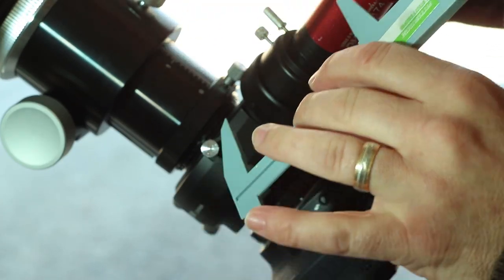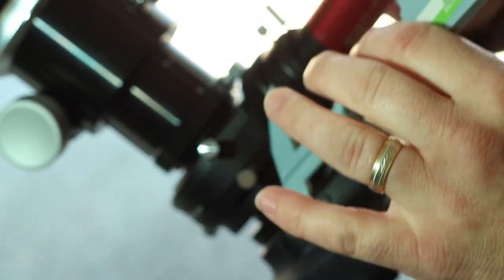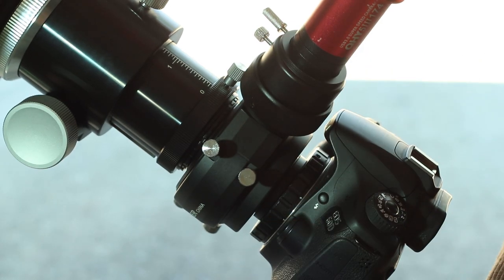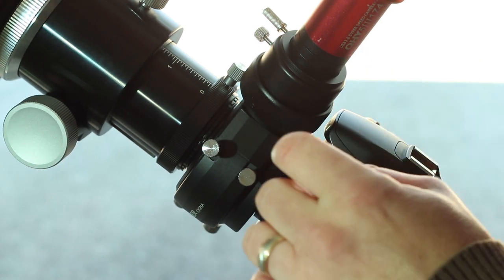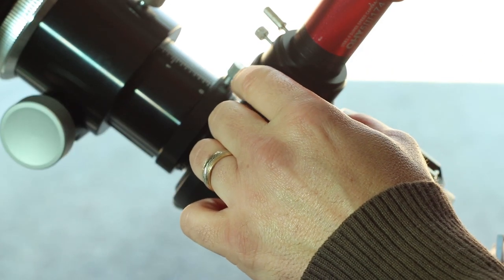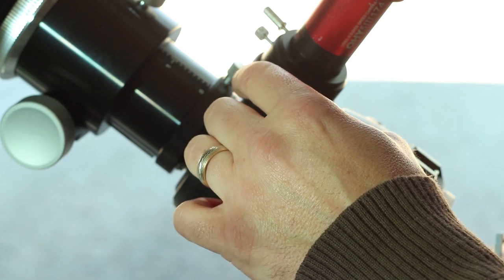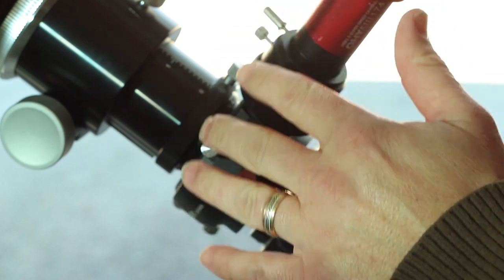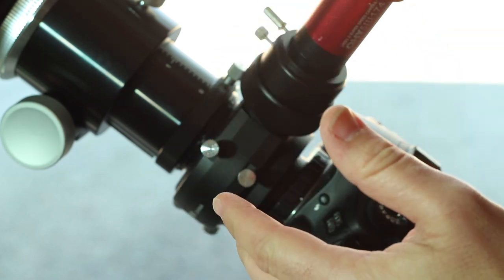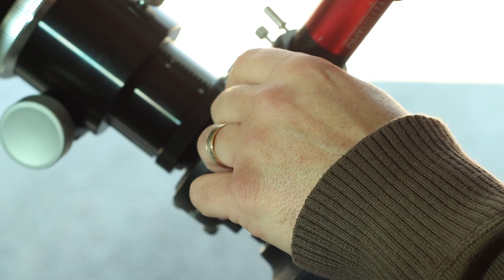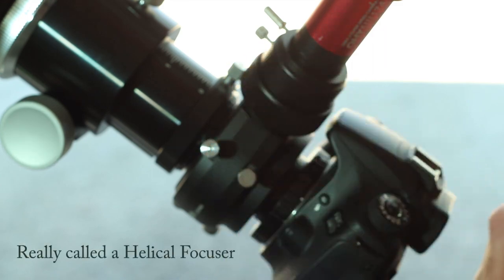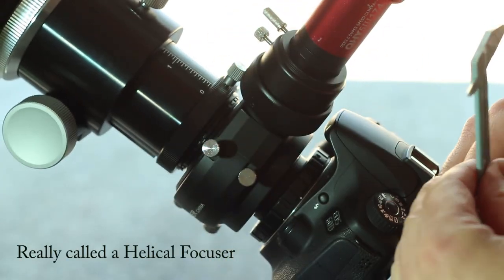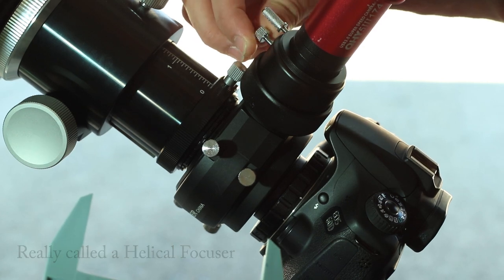And once you get that lined up like this, you can do this at night. This is going to give you a ballpark estimate and get you pretty close. You're still going to want a micro focuser on the top part of your OAG. The Celestron comes with one, which is nice, but some of the OAGs don't. I'd recommend getting a threaded micro focuser for that. I'm not going to mess with the focus on this because I've already got this one set up and good to go.